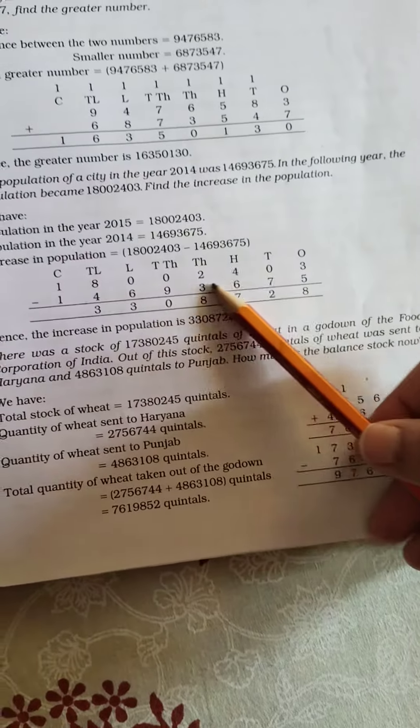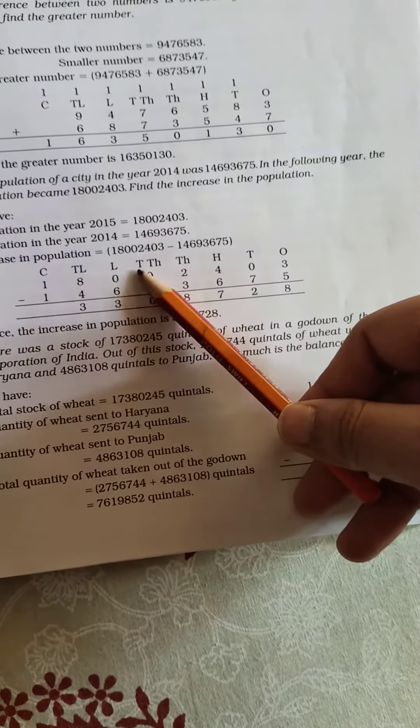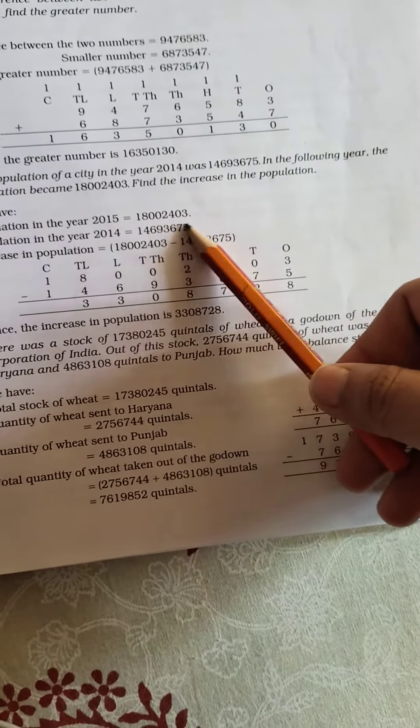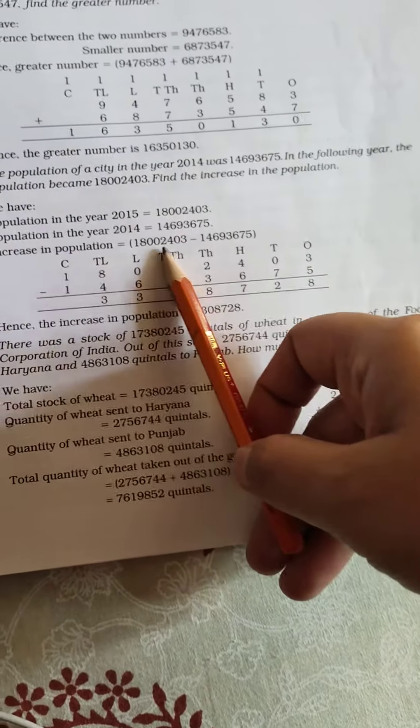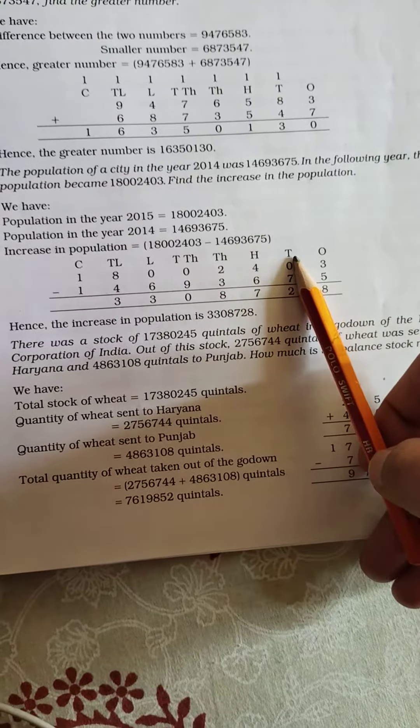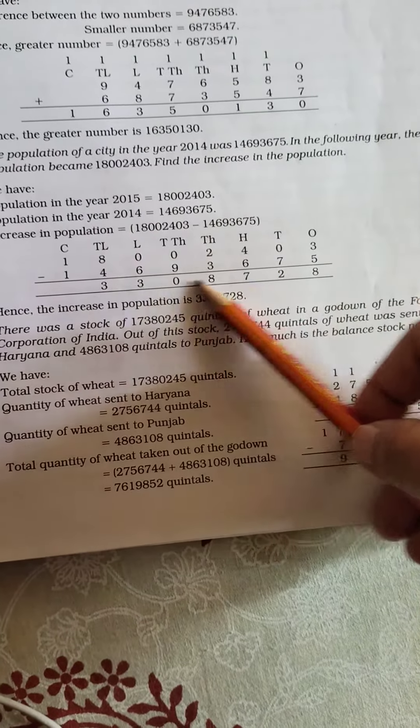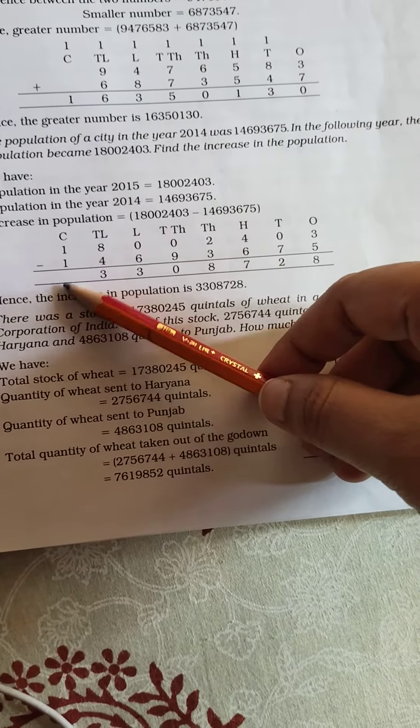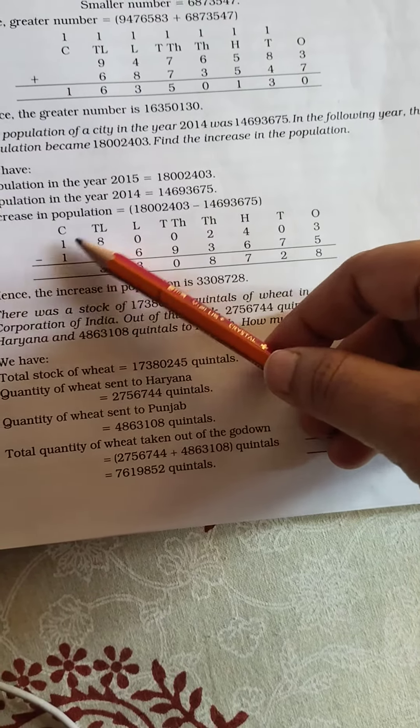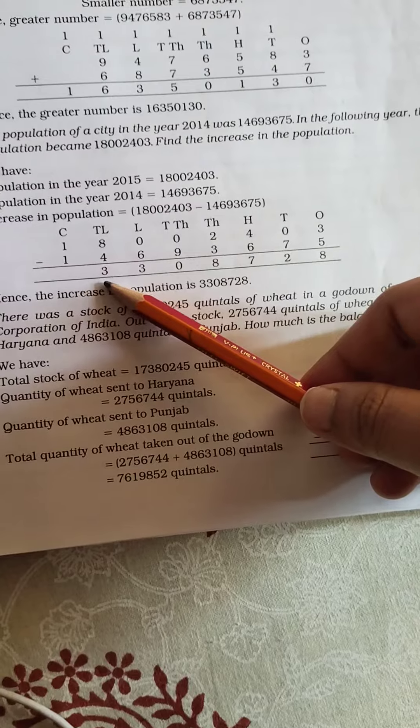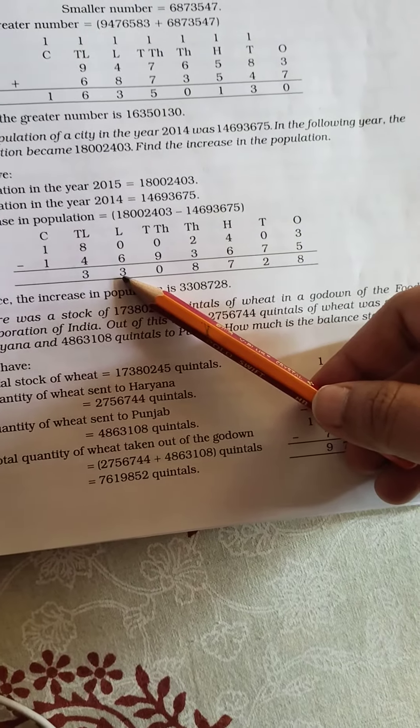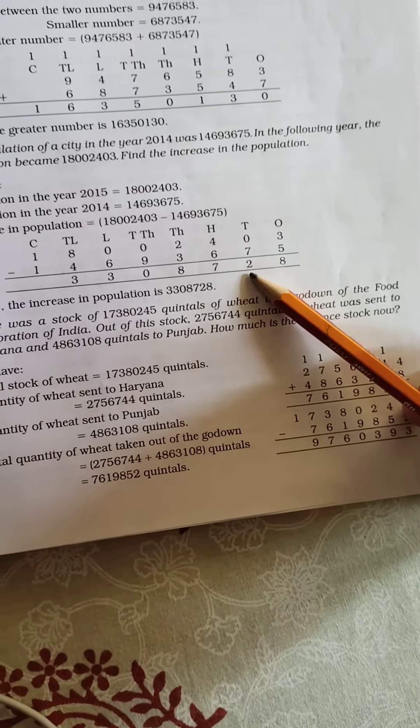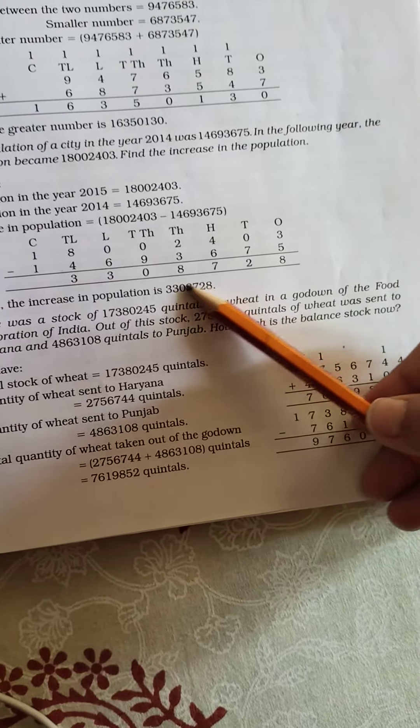So, first write the place value chart, then place these two numbers. We already know that this is the greater number, this is the smaller number. So, first we have to put the greater number and then the smaller number. Then we have to subtract this from that and we will get 33,908,728. This is the number.